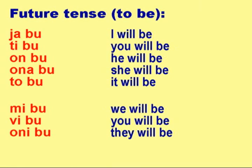Future tense — To be: YA BU, TI BU, ON BU, ONA BU, TO BU, MI BU, BI BU, ONI BU.